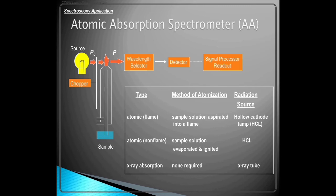Atomic absorption spectrometer. Type: Atomic flame. Method of atomization: sample solution aspirated into a flame. Radiation source: hollow cathode lamp HCL. Atomic non-flame: sample solution evaporated and ignited. X-ray absorption: none required, x-ray tube.